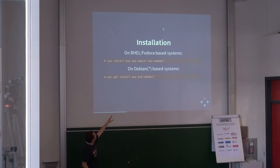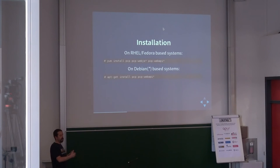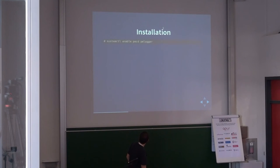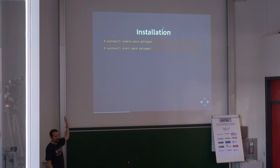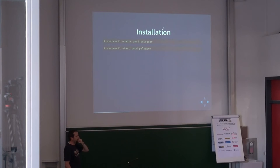If you want a web API — so you want the metrics exported by Performance Co-Pilot in some JSON format over the network — you just install a web API package. Once you install them, that's really all you have to do in most cases. Enable the service if you're on a systemd system; otherwise use a sysv script. The service you care about is PMCD. But if you want historical data, which typically is the use case, you will also start PMlogger.